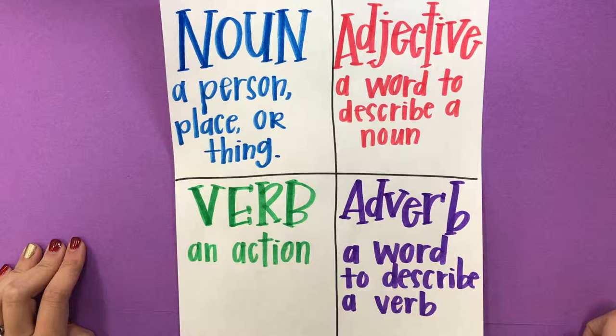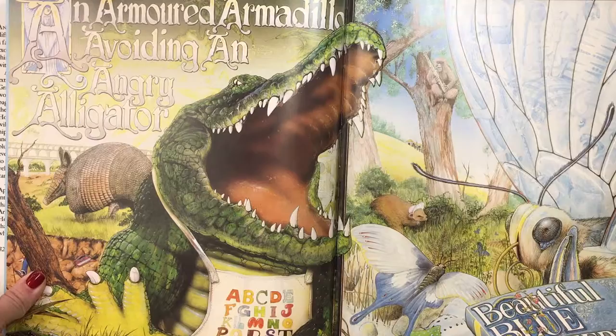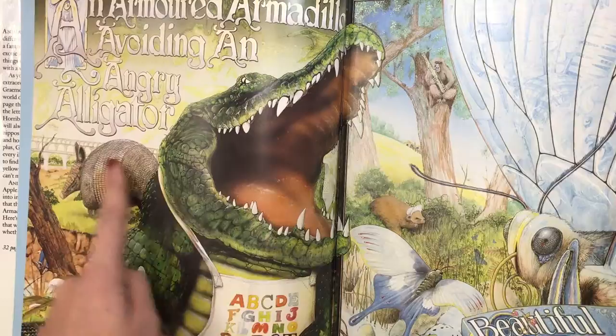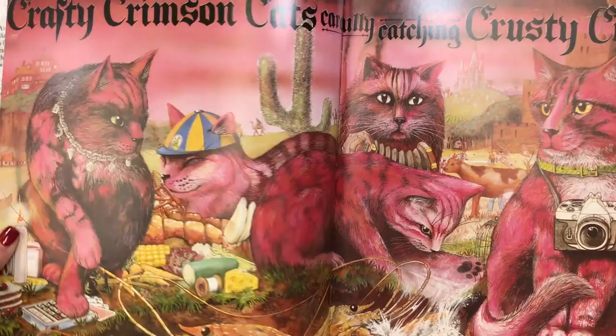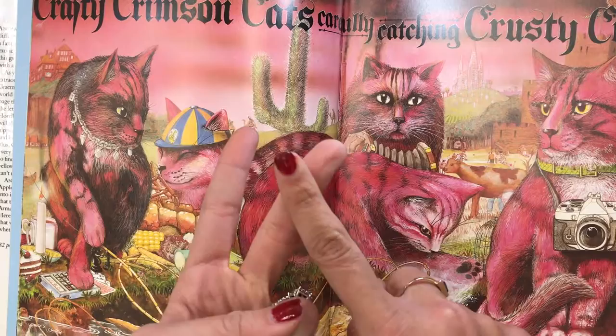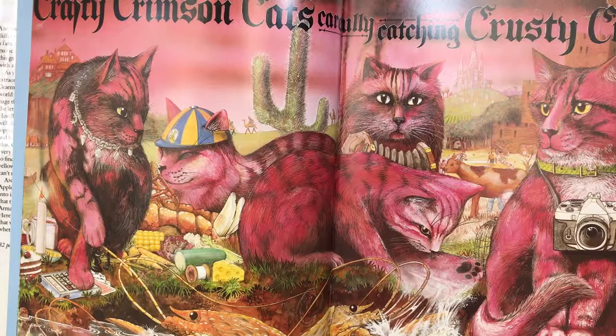An adverb is a word to describe a verb, like quickly. Usually it ends in -ly. As we turn through the pages of Animalia, you'll notice that these pages have all A's, all B's, all C's for their nouns, adjectives, verbs, and adverbs. Each person in class is going to get a letter.